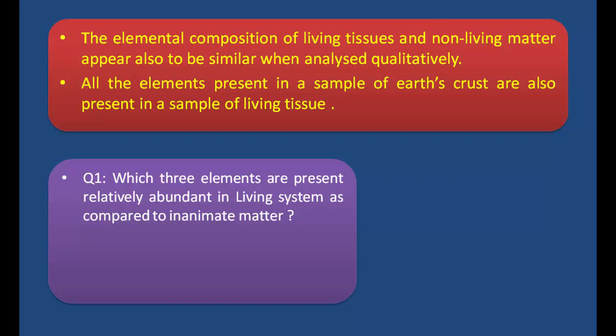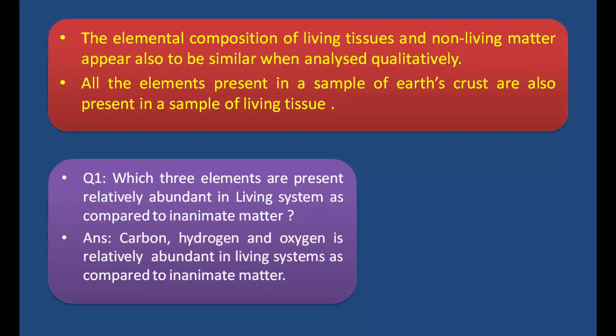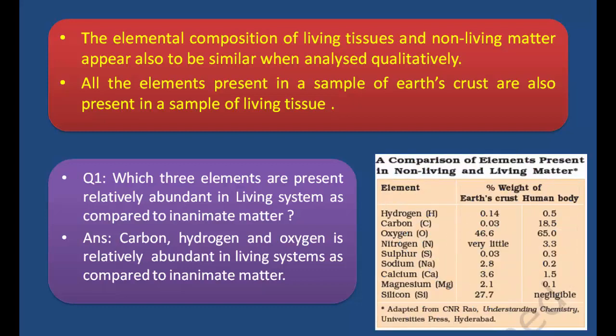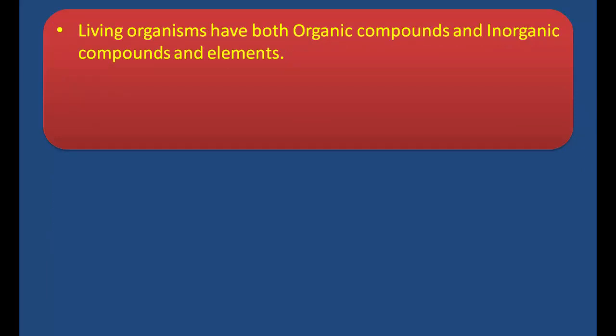Q1: Which three elements are present relatively abundant in living systems as compared to inanimate matter? Answer: Carbon, hydrogen, and oxygen are relatively abundant in living systems as compared to inanimate matter. You can see in the table that carbon, hydrogen, and oxygen are present in much greater quantities in the human body compared to the earth's crust.